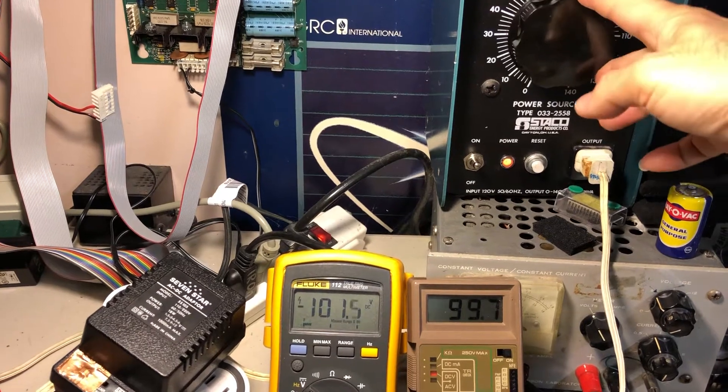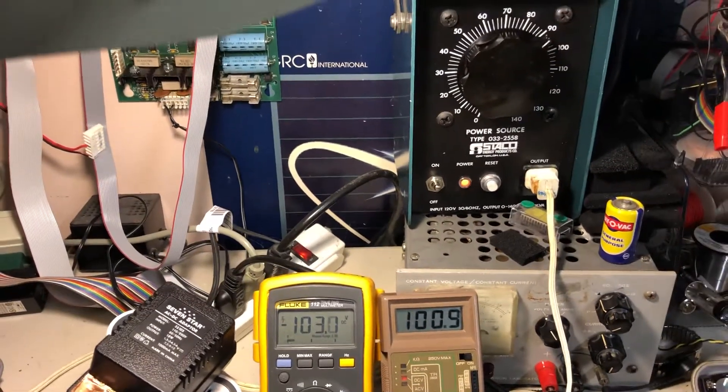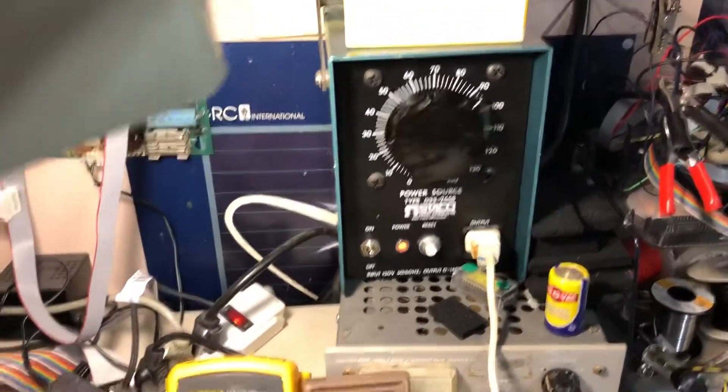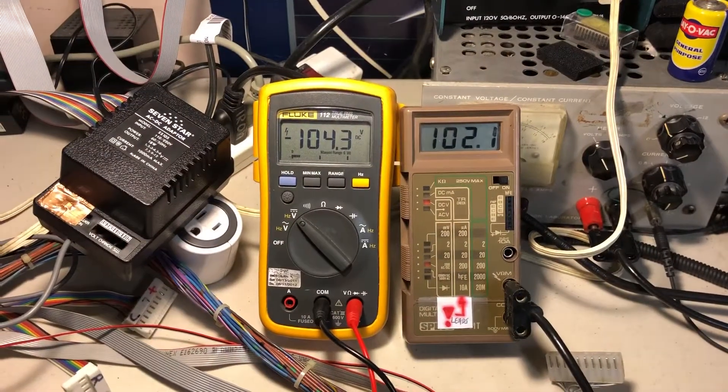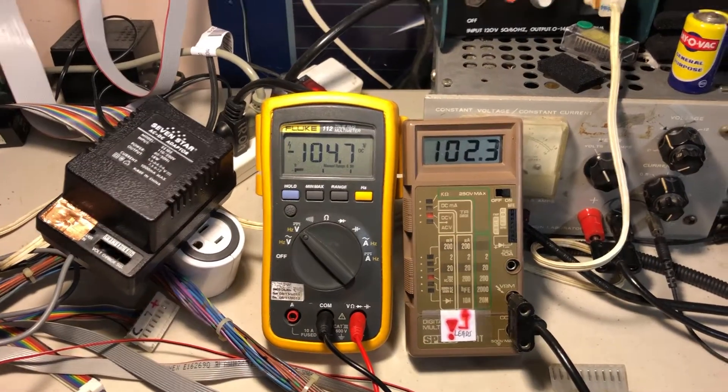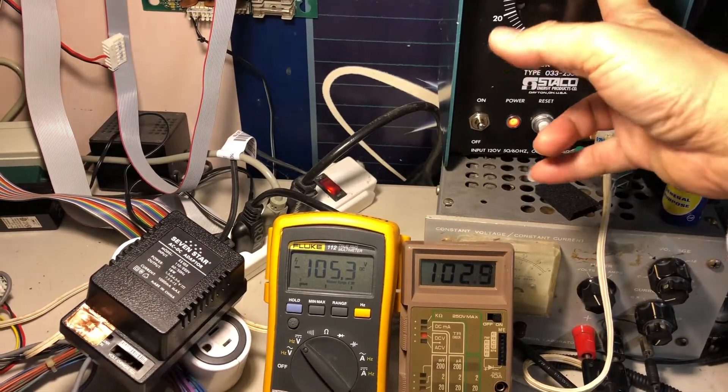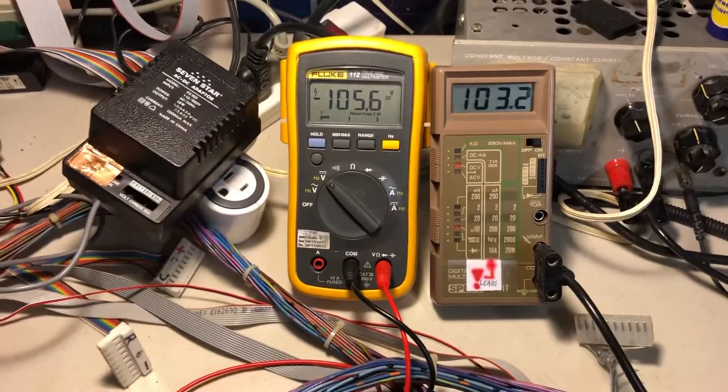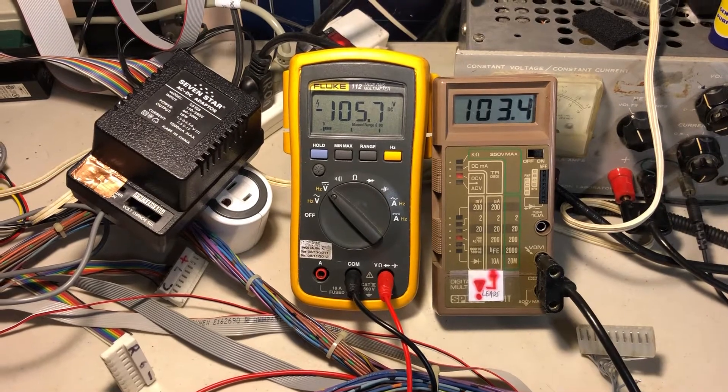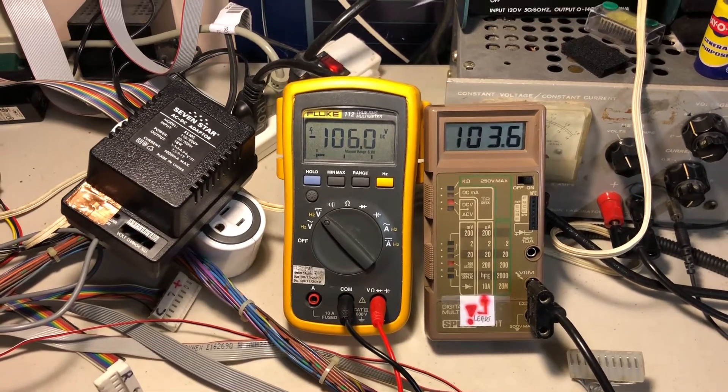Then approximately here with 90 volts AC input we're getting 100 volts plus and minus, and the rest of the way increase it will not change. It will stay at 105 volts plus and minus showing that the board is regulating.